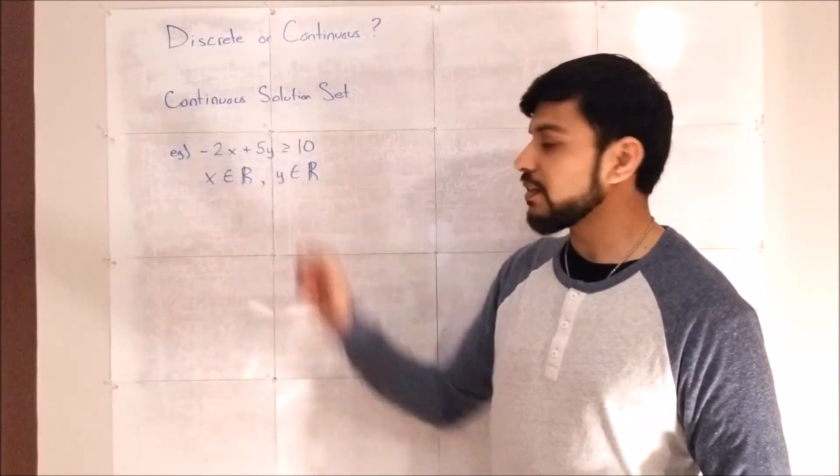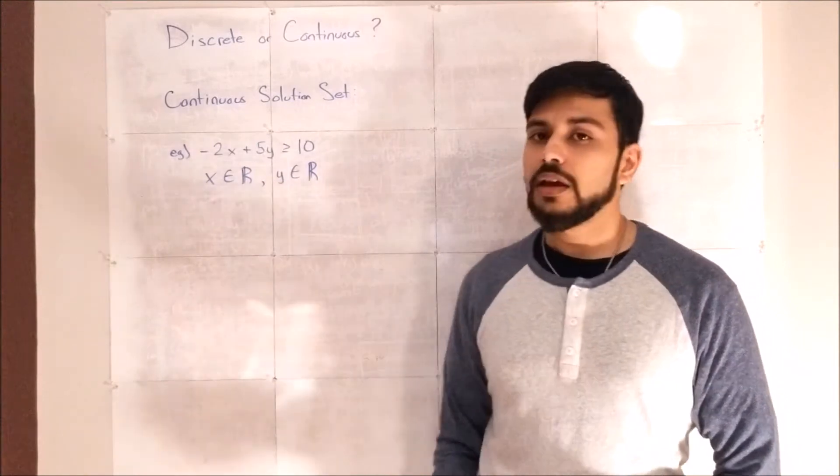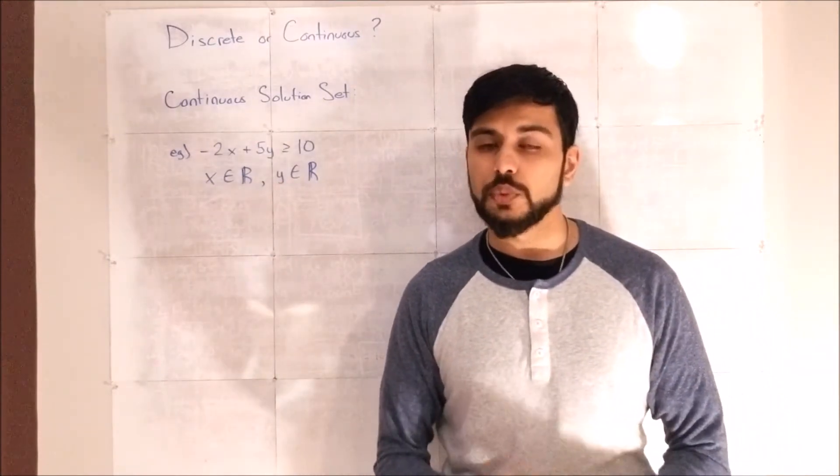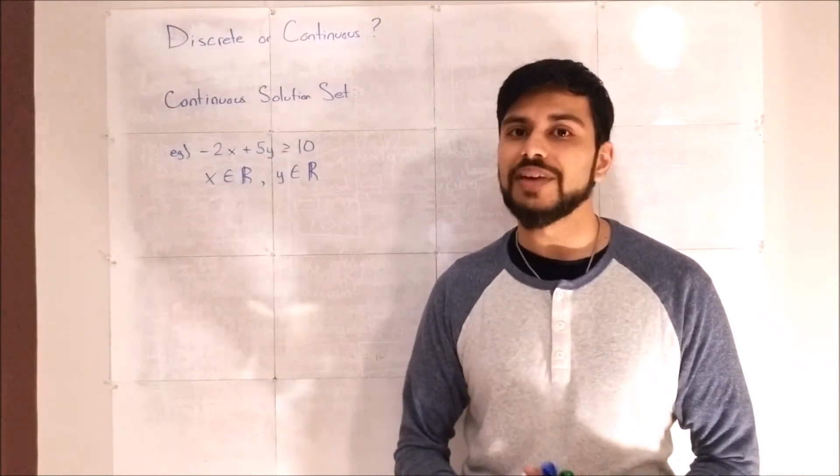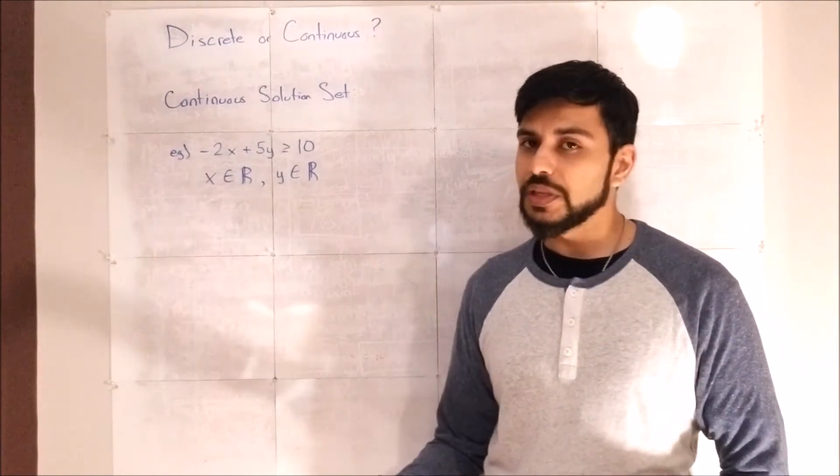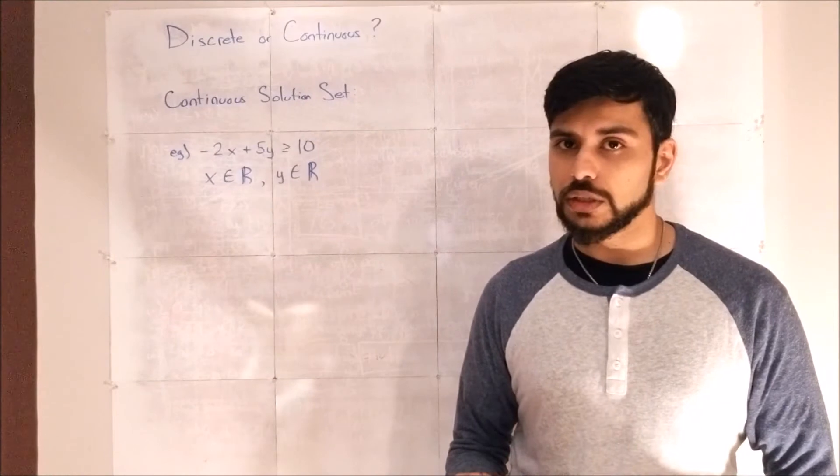In this case here, x and y are both elements of real numbers, which means that all x values and all y values are valid. And that would be the same as our example that we just worked on.